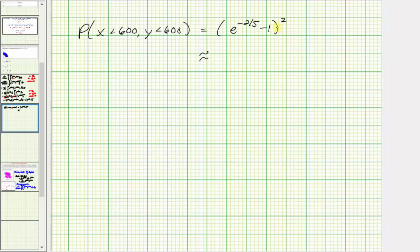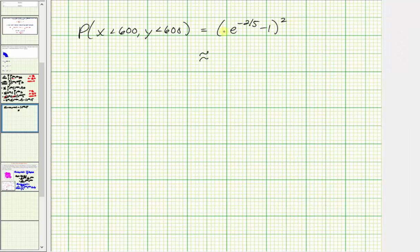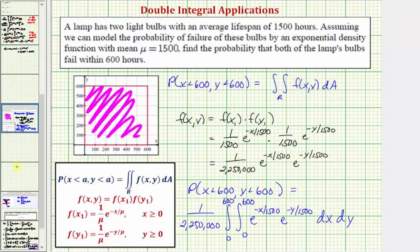Converting to a decimal using the calculator: open parenthesis, e raised to the power of negative 2/5, minus 1, close parenthesis, squared — we get approximately 0.1087, which as a percentage is approximately 10.87%. This is the probability that both light bulbs will fail within 600 hours.